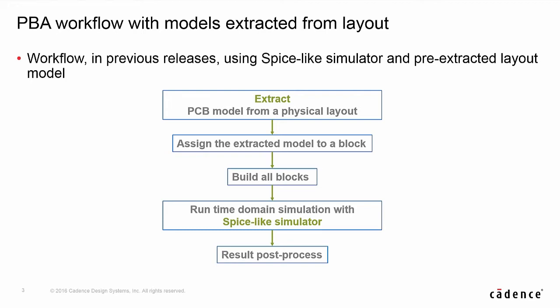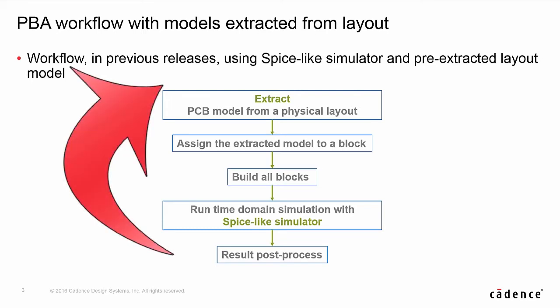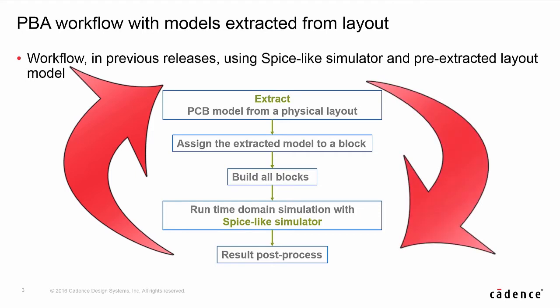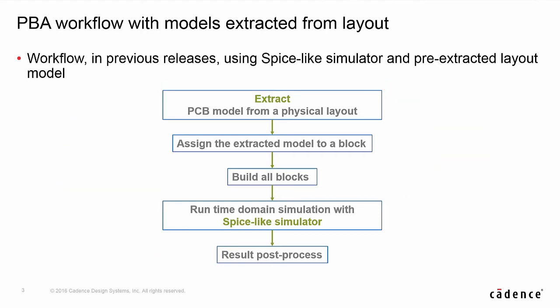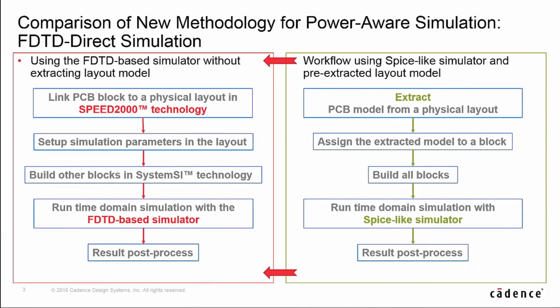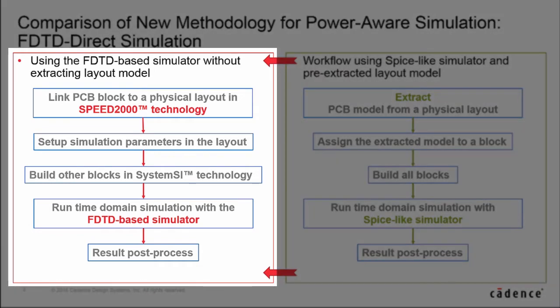但是这种方法不允许直接访问 layout 的环境。如果设计工程师需要修改 layout 并且重新仿真,他们必须在 layout 里面进行修改,然后重做模型提取和模块复制。对于面向电源的仿真,提取出的模型通常采用 S 参数的格式,并带有大量的端口。为了避免在仿真过程当中出现收敛性的问题,常常需要把这类模型转换成 SPICE 子电路的格式。在 SystemSI 的新版本当中,我们添加了一个新的工作流程。